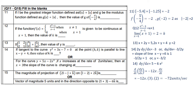Question: find the magnitude of the projection of (2i − j + k) on (i − 2j + 2k). Using the formula a·b / |b|: numerator = 2×1 + (−1)×(−2) + 1×2 = 2 + 2 + 2 = 6. Denominator = √(1² + 2² + 2²) = √9 = 3. So the projection magnitude is 6/3 = 2 units.